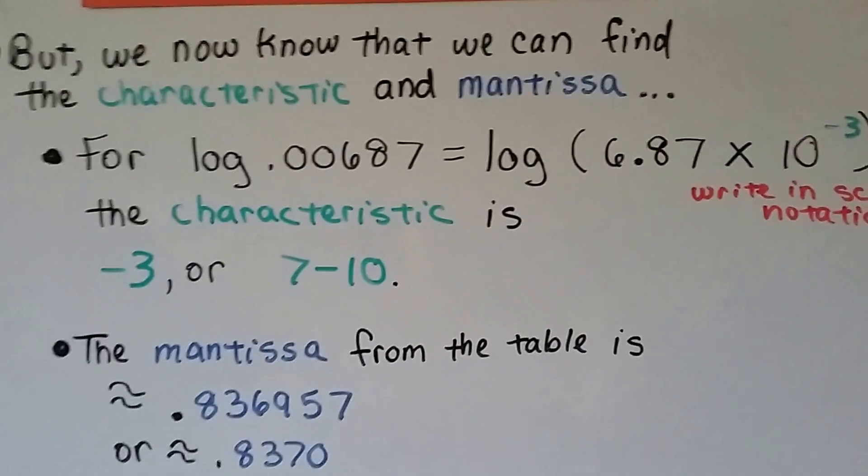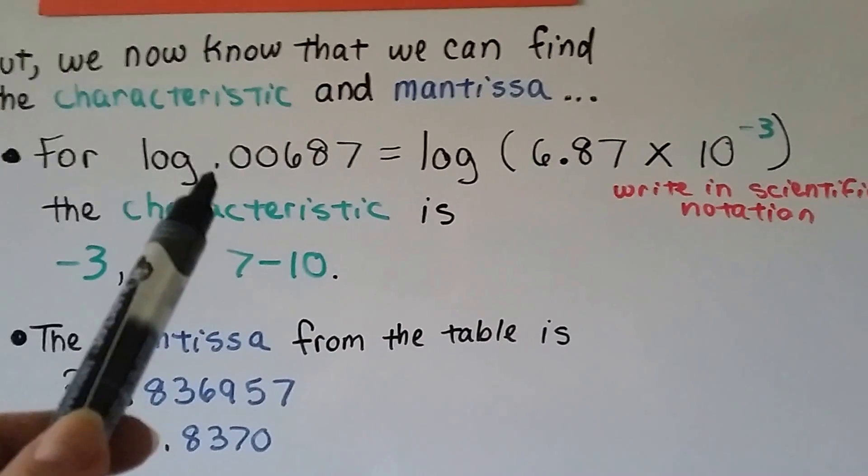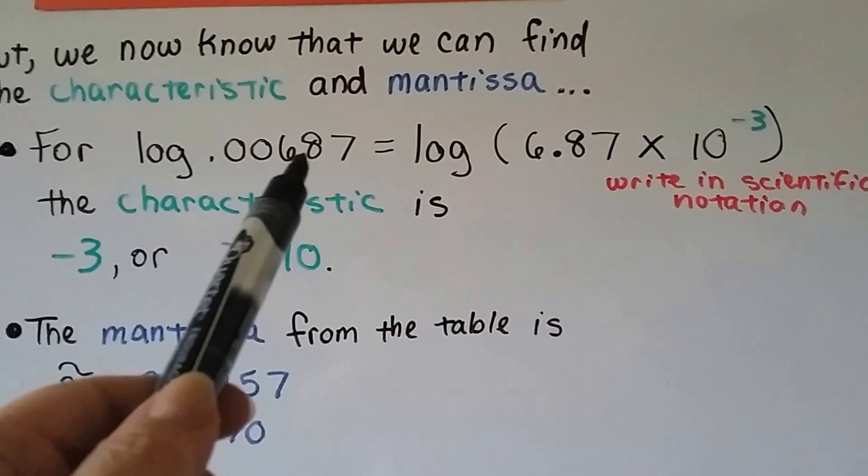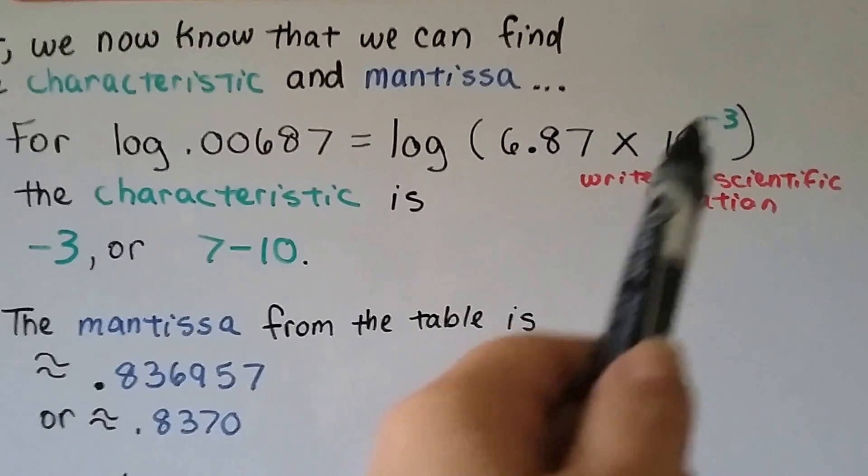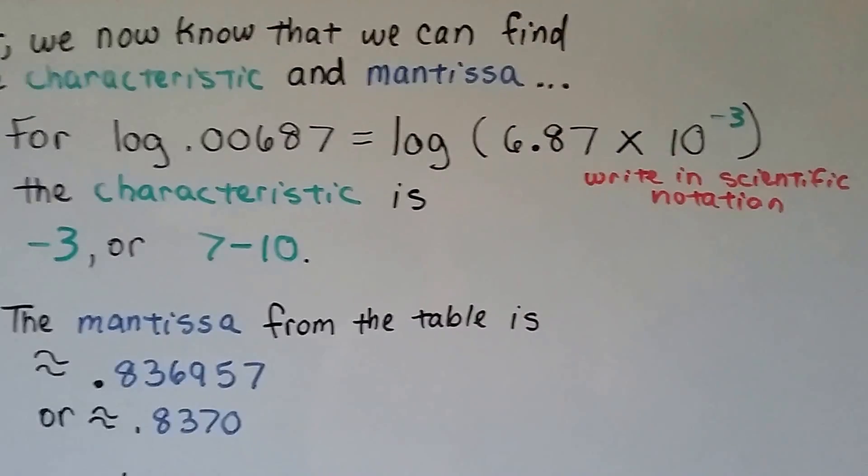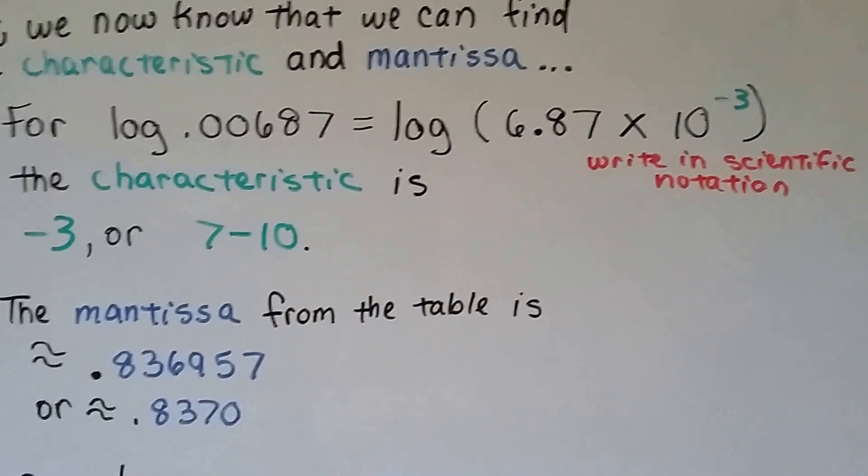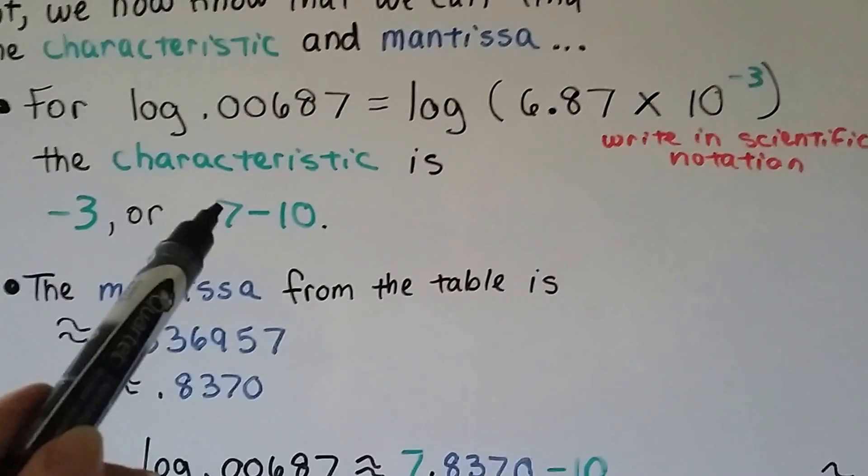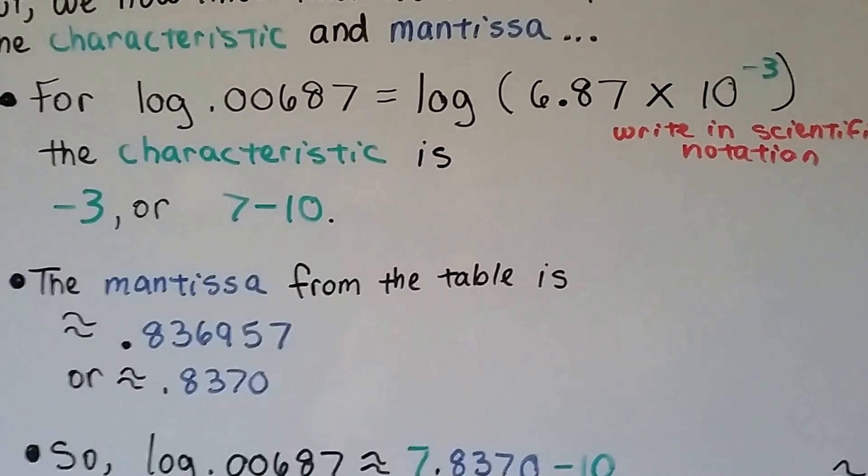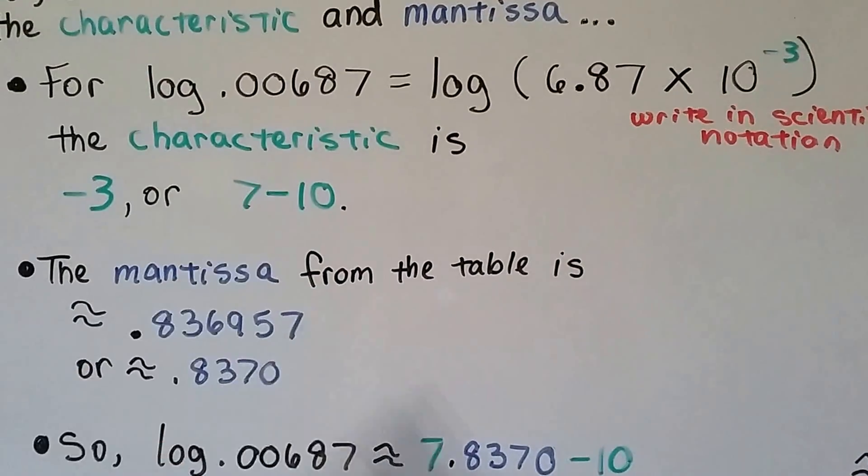We now know that we can find the characteristic and mantissa. We just use scientific notation for log 0.00687. We need to move this decimal point in between the 6 and the 8. So we're going to go 1, 2, 3 hops to the right. So we're going to have a negative 3 exponent on our 10. The characteristic is negative 3. We can also write it as a 7 minus 10. That's the same thing as negative 3.